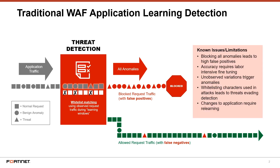Application learning is a good detection method, but it has many drawbacks. These include high false positive detections, it is labor-intensive to fine-tune, unobserved legitimate traffic creates anomalies, aggressive tuning lets attacks slip through more easily, and changes to the application itself require substantial relearning to prevent false positive detections.